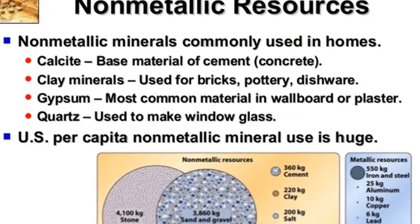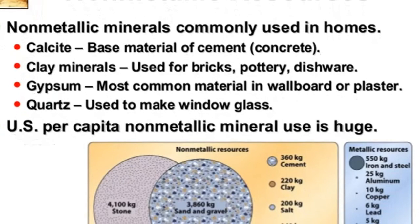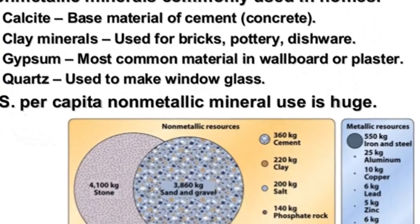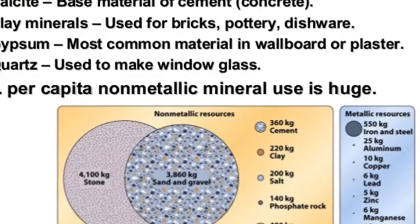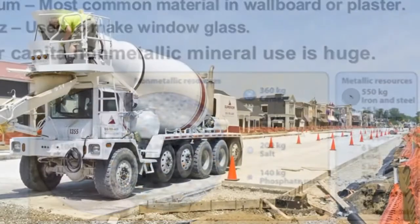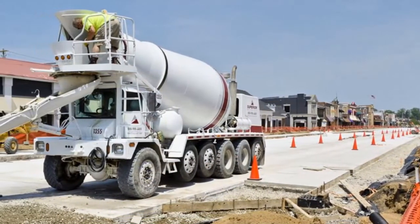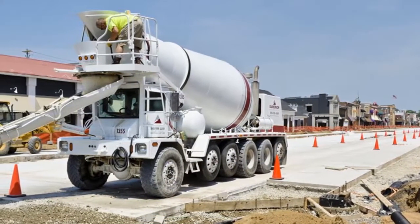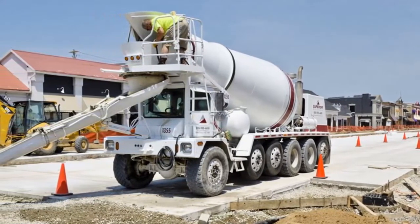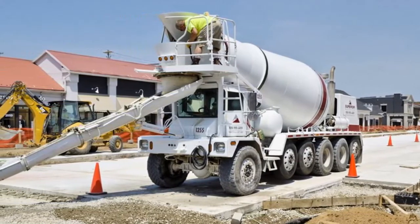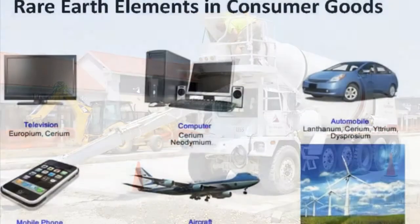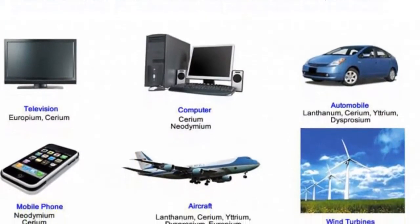The annual per capita consumption of several important metallic and non-metallic mineral resources for the United States is each person's prorated share of the materials required by industry to provide the vast array of homes, highways, cars, electronics, cosmetics, packaging, and so on that modern society demands.